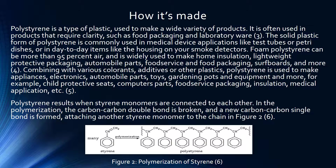Here you can see the figurative process of polymerization of styrene — how styrene becomes polystyrene. Polystyrene results when styrene monomers are connected to each other. During polymerization, the carbon-carbon double bond is broken and a new carbon-carbon single bond is formed, attaching another styrene monomer to the chain.